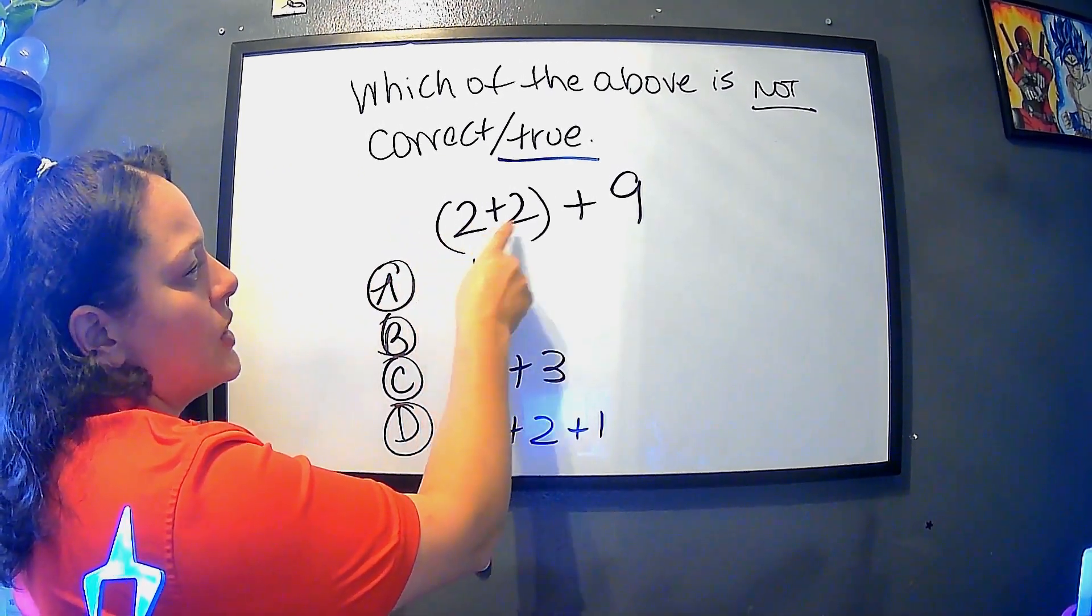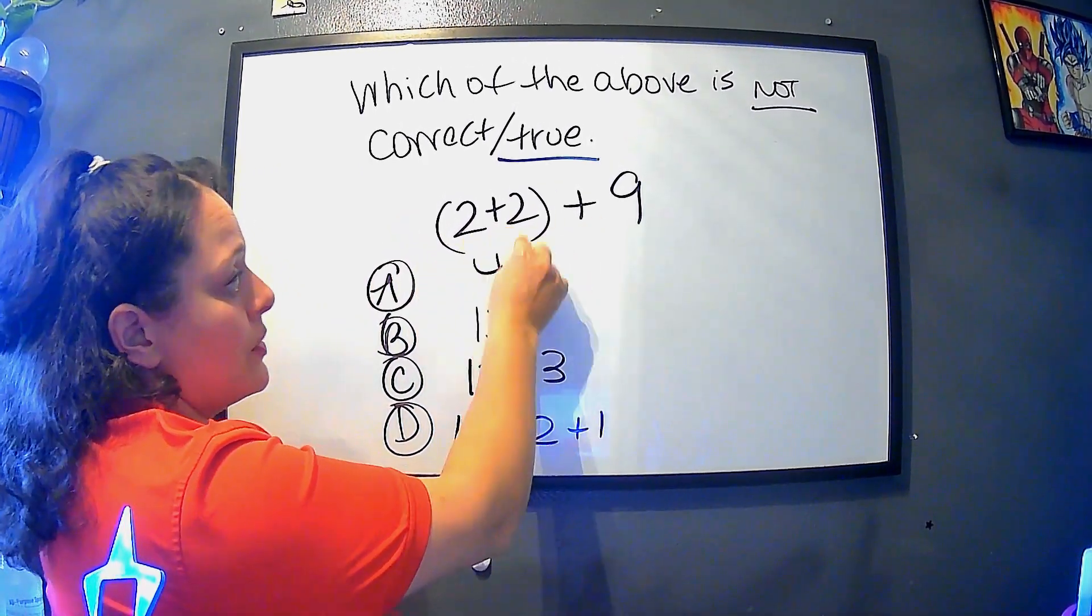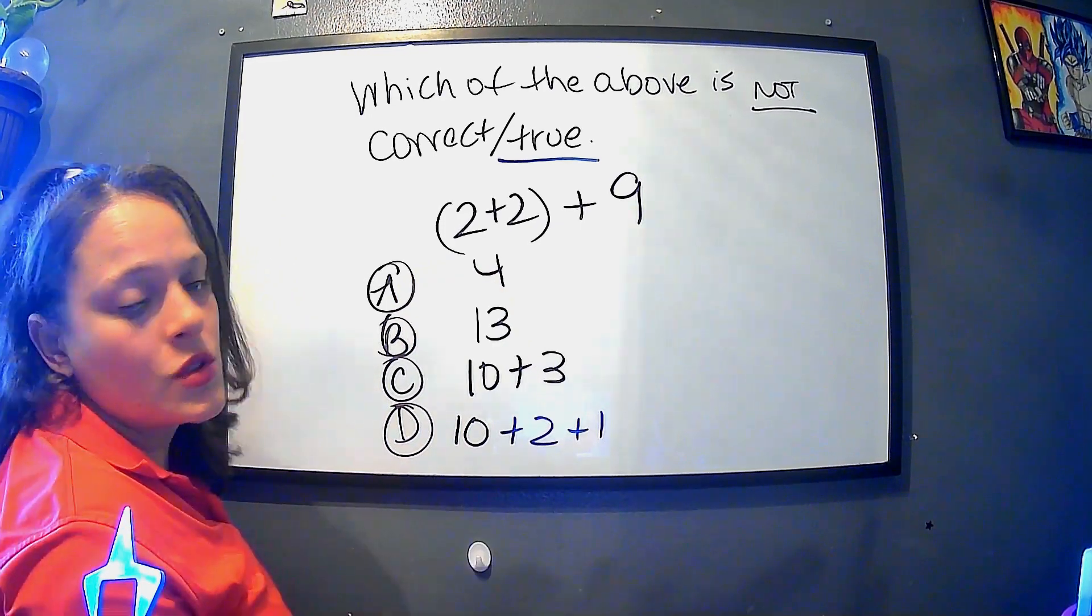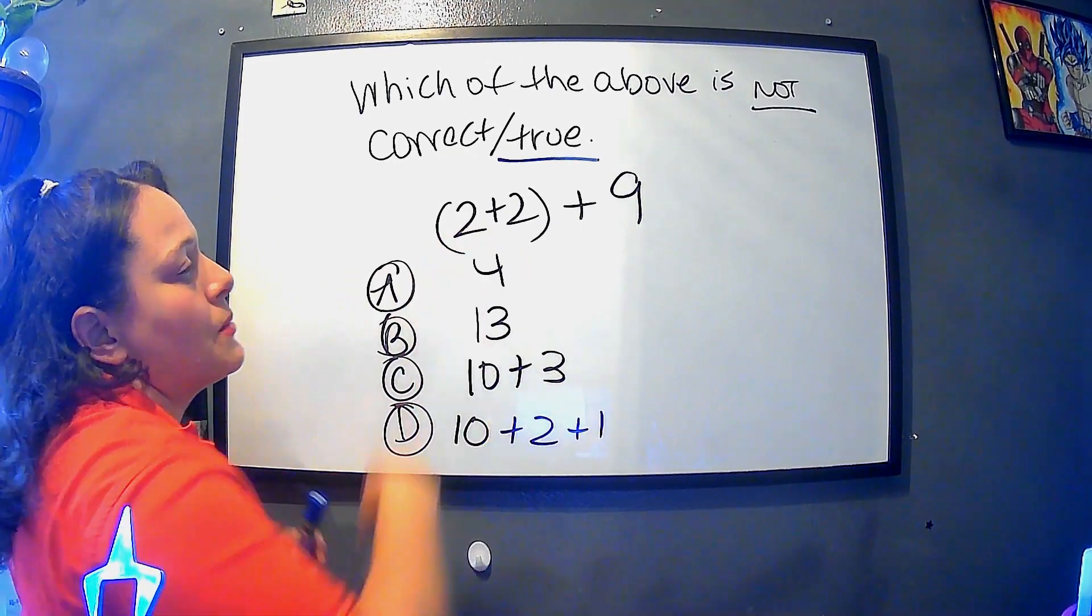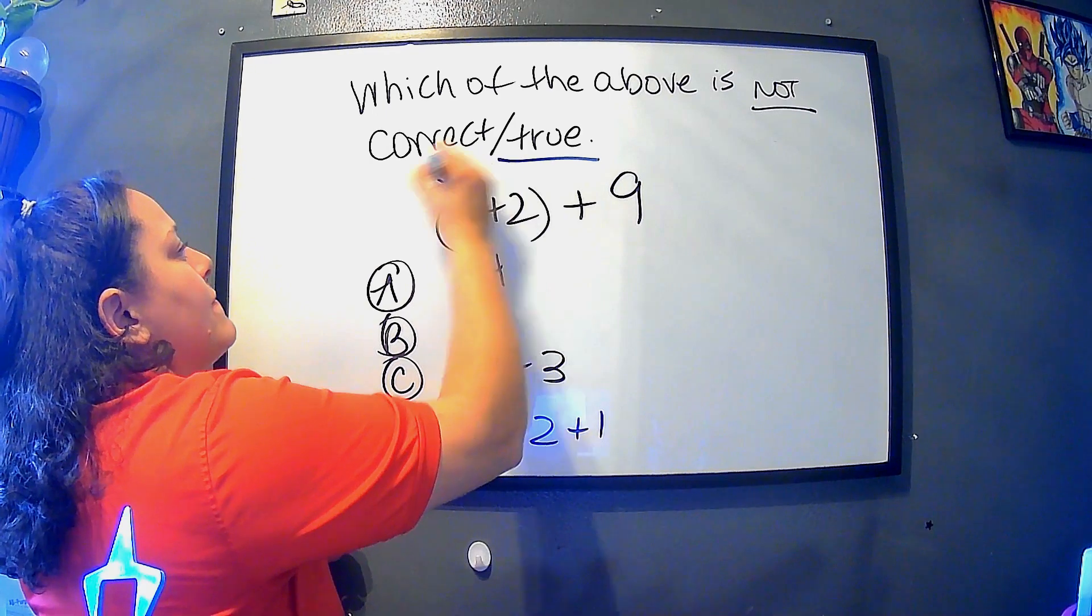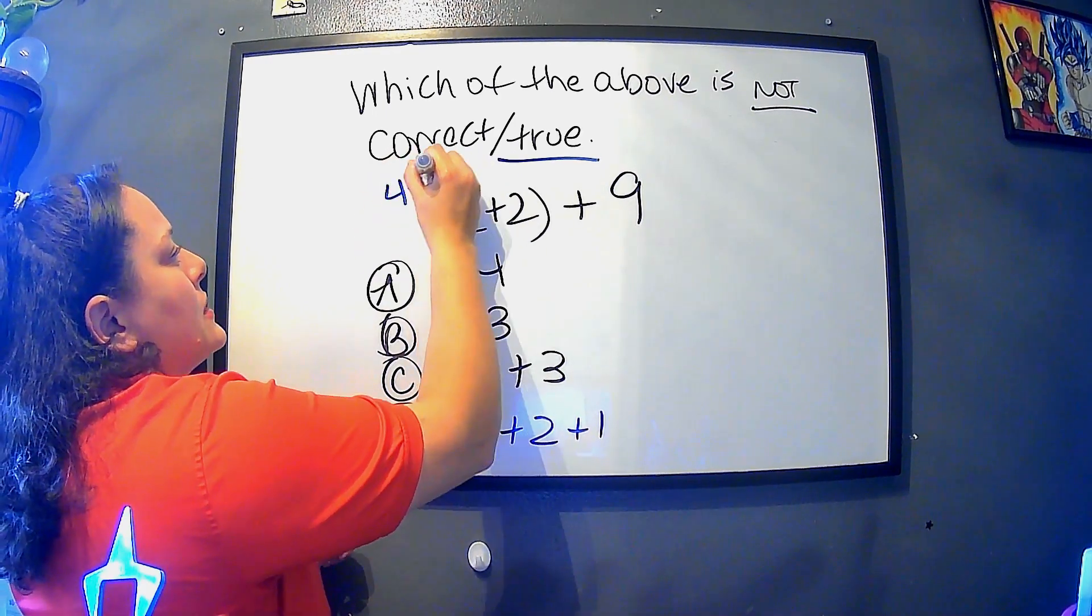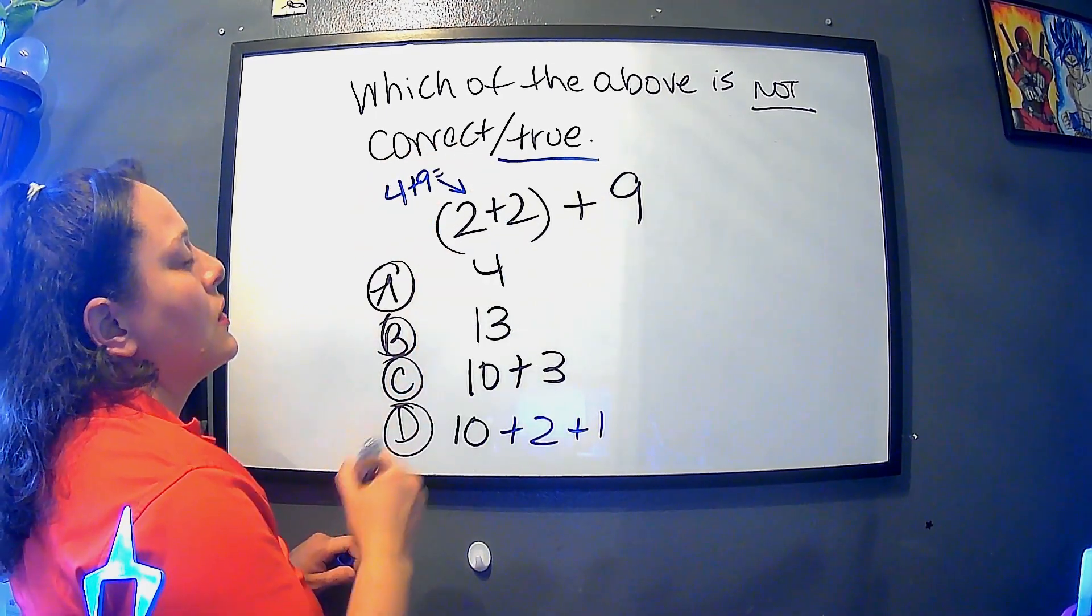So then the problem is 2 plus 2 in parentheses plus 9. So I don't know if you know, but what's in the parentheses has to be done first. So we will have 4 and then 4 plus 9 equals 13.